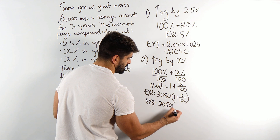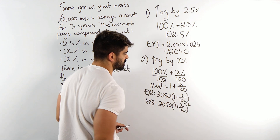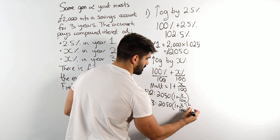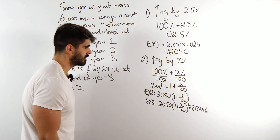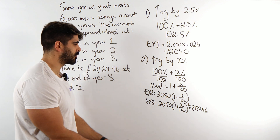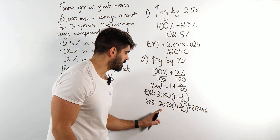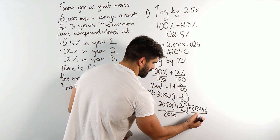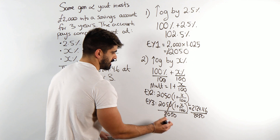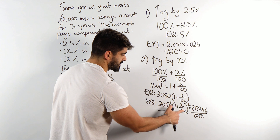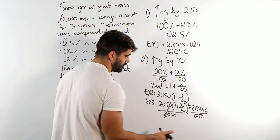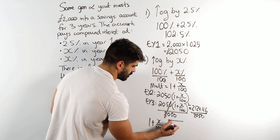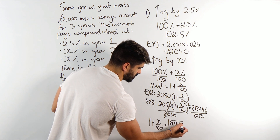We have 2050 times (1 + X/100) squared, and this equals £2,124.46. Now we just need to rearrange for X. We divide both sides by 2050 to get (1 + X/100)² = 2124.46 / 2050. To undo the square, we take the square root of both sides: 1 + X/100 = √(2124.46 / 2050).